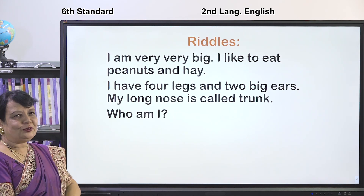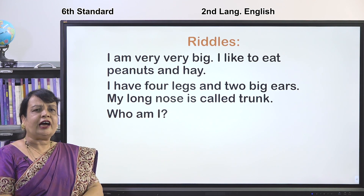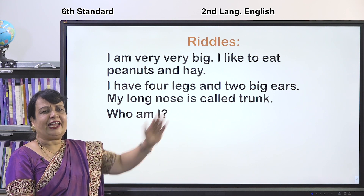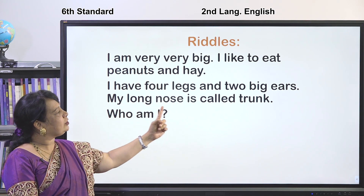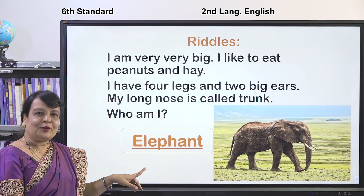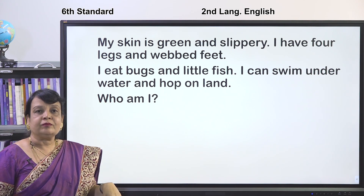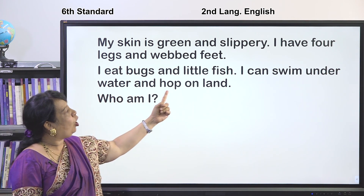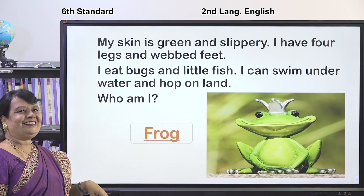Now I have some riddles for you. Riddle 1: I am very big, I like to eat peanuts and hay, I have four legs and two big ears, and my long nose is called a trunk. Who am I? It is the elephant! Riddle 2: My skin is green and slippery, I have four legs and webbed feet, I eat bugs and little fish, and I can swim underwater and hop on land. Who am I? It is the frog!